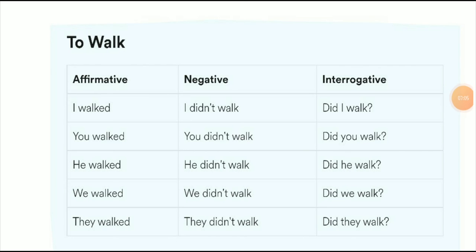The simple past tense shows that you are talking about something that has already happened. It is used to show that a completed action took place at a specific time in the past. The simple past is also frequently used to talk about past habits and generalizations. It is formed by using verb plus 'ed'.